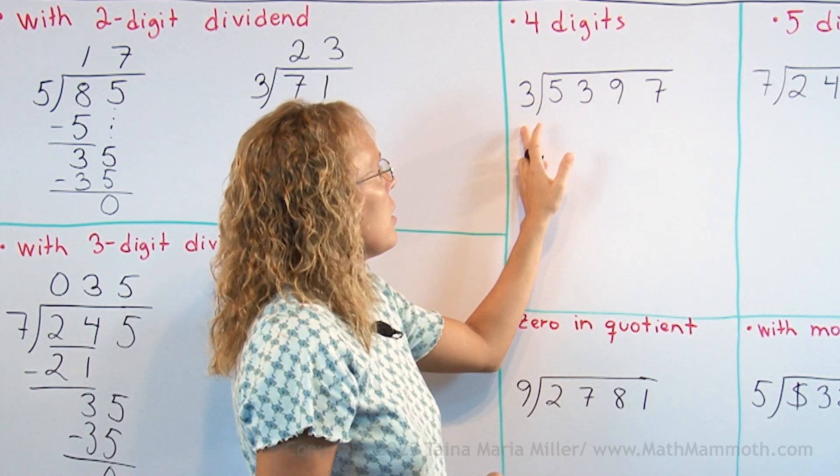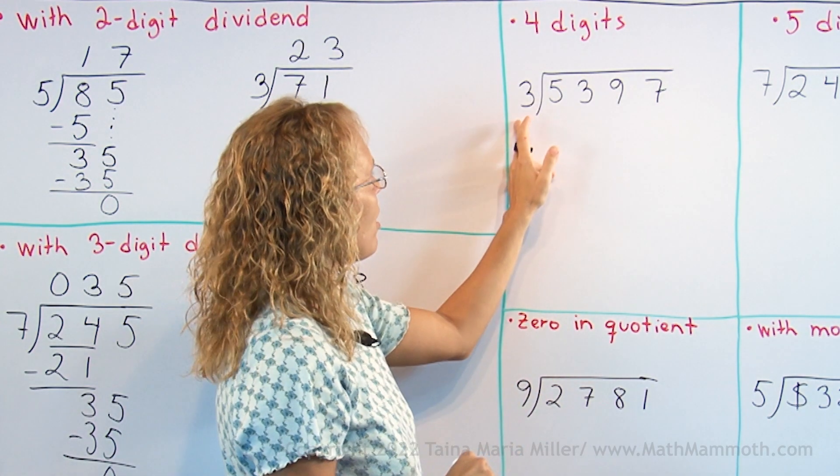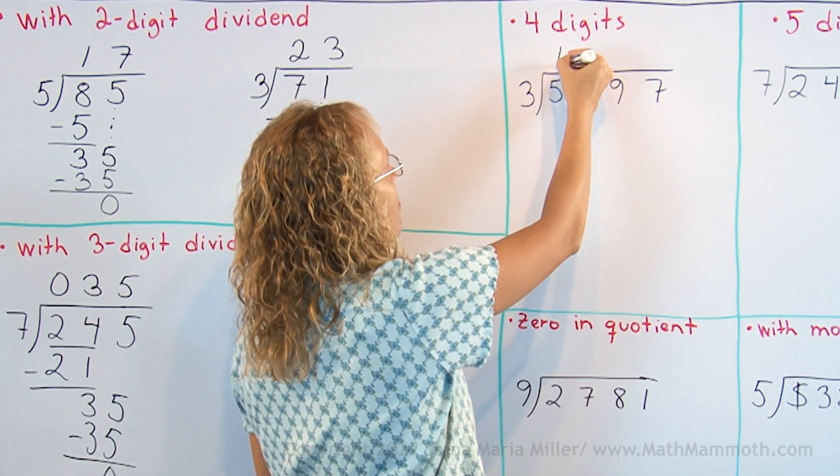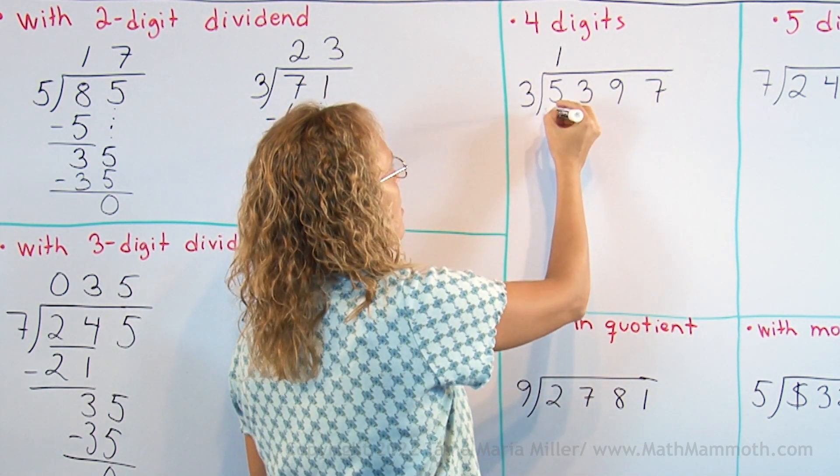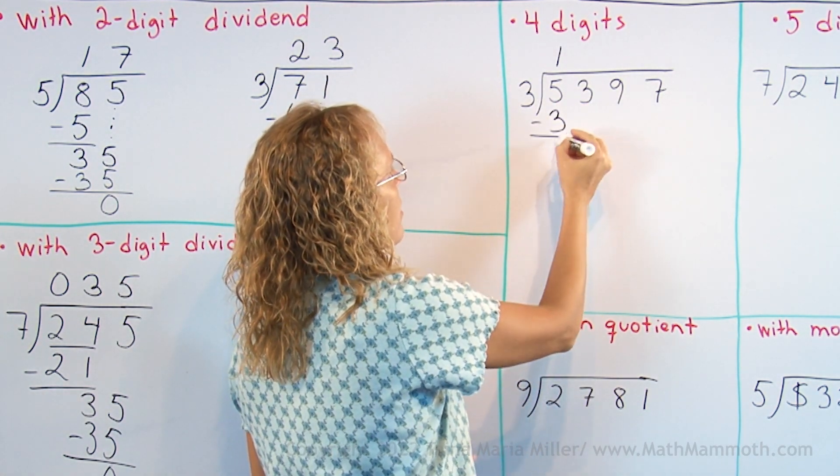With 4 digits, it's the same. 3 goes to 5 one time, that's the thousands digit here. 1 times 3 is 3, now subtract 2.